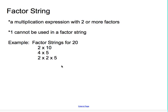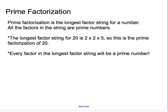Now, there's something special about the longest factor string that can be made for a number. We call this the prime factorization. Prime factorization is the longest factor string for a number. All the factors in the string are prime numbers.